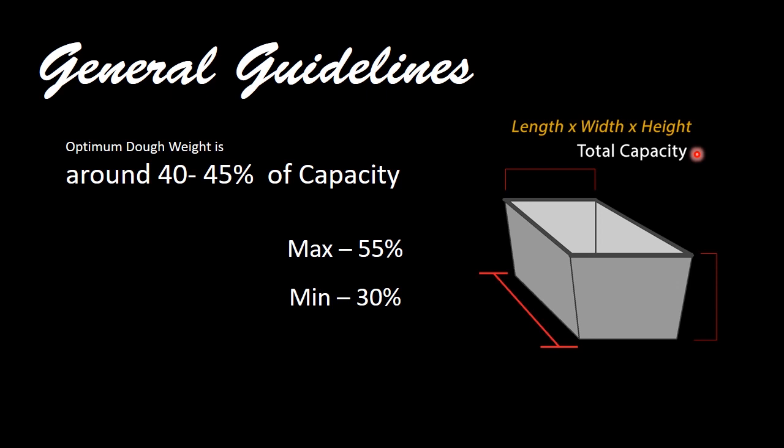So let's just say that this pan length times width times height translates into around 1000 grams. Then we know that our optimum dough weight generally as a rule of thumb will be about 40 to 45 percent. I would probably lean upwards of around 45 percent.